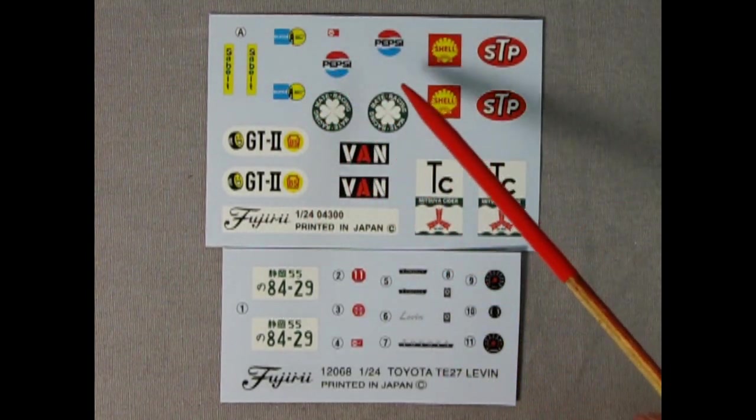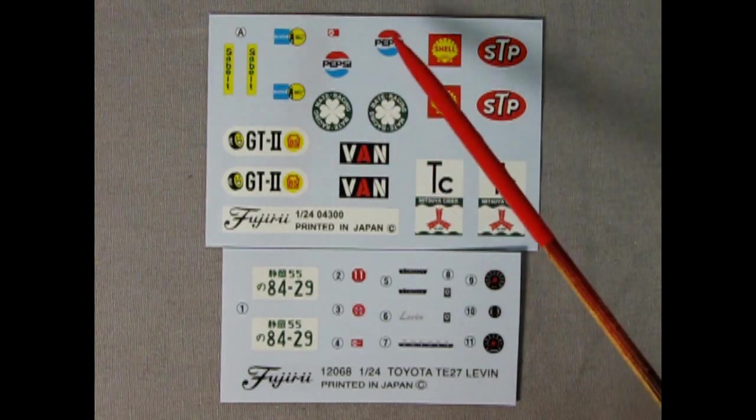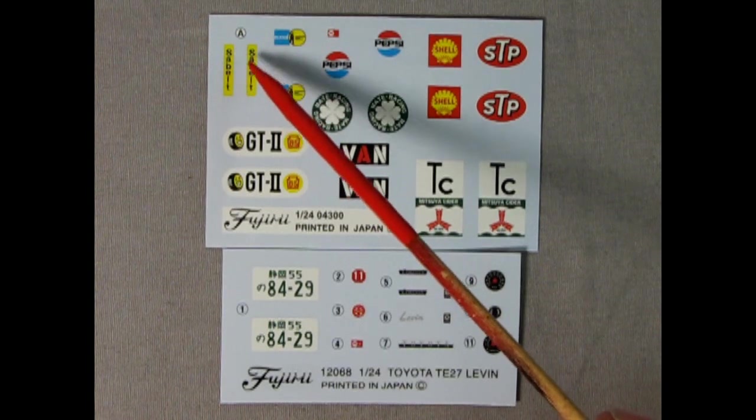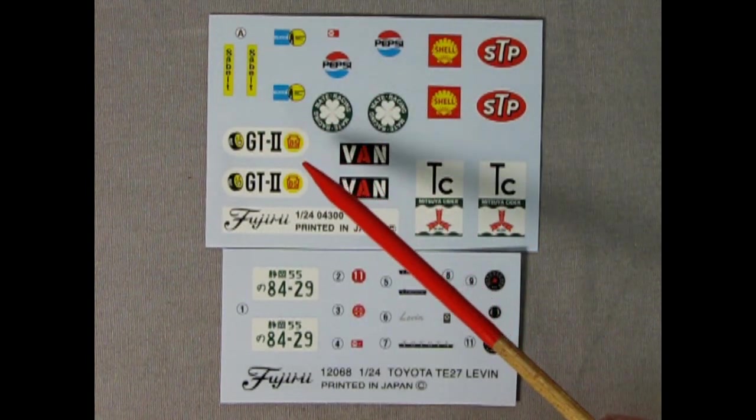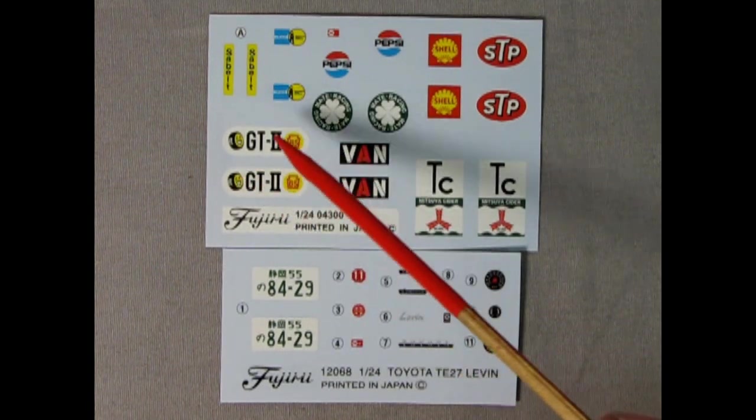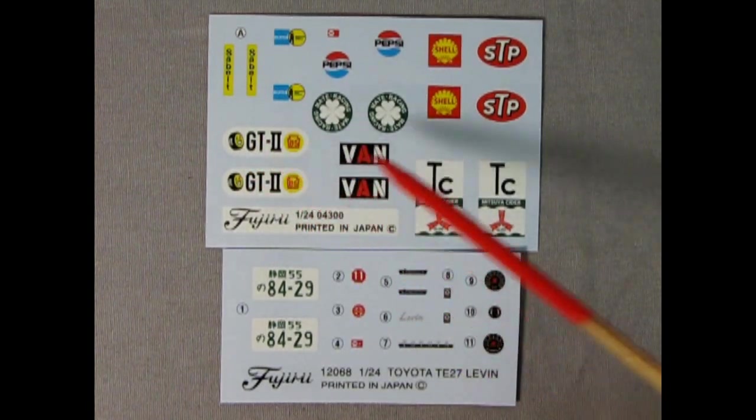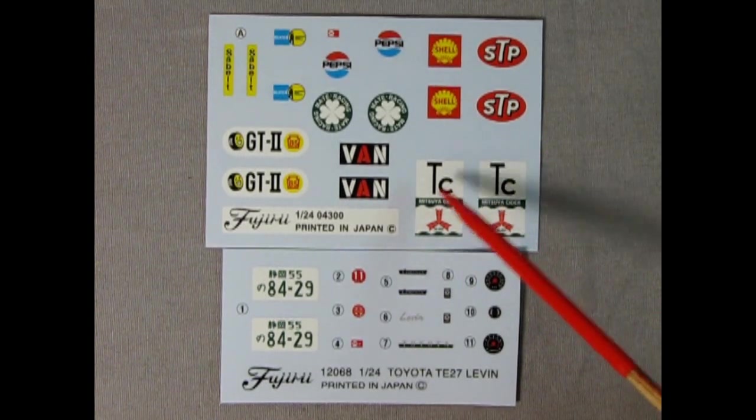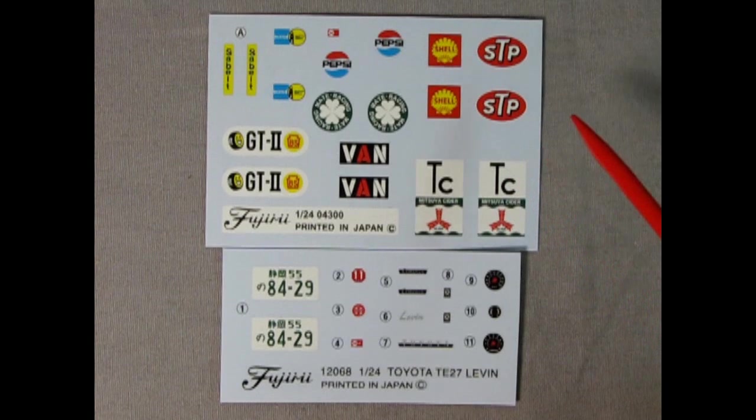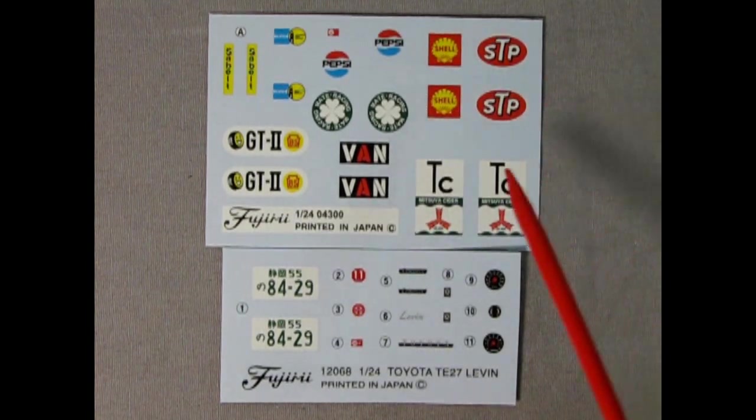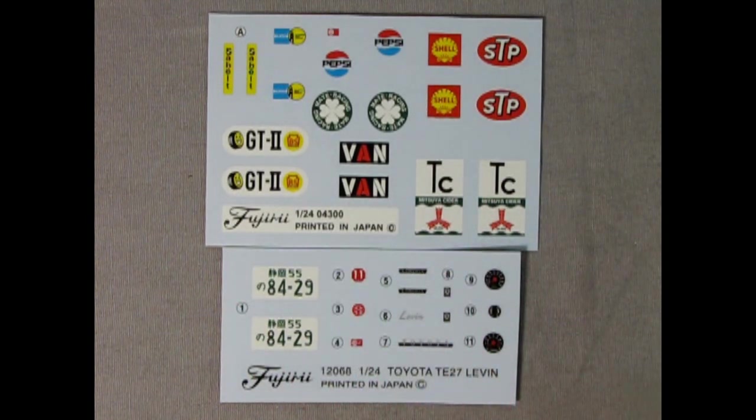But I do love all these sponsors that they got on here. Again, Bilstein Shocks and Mate Racing. Sabelt I think or Sabelt or something. I got to get new glasses guys. So I'm having a little trouble here. GT-2. I do believe this is tires. BS tires. BS tires. Mitsua Cider. So that you could also use on that vending machine. And of course STP and Shell. These look good in a gas station somewhere. So again, really excellent stuff and a wonderful, colorful, bright decal sheet.